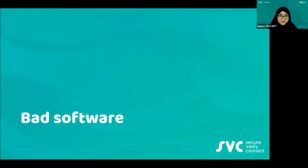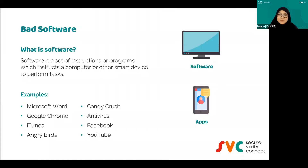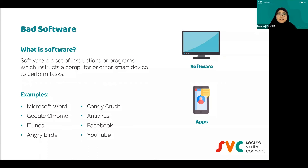The first one is bad software. To make it simple, software is basically something that we install to our devices — your laptop or even your smartphone. Whatever you install to your devices is considered software. If you install it to your laptop or computer, we call it software. If you install it to your smartphone, we call it applications or apps for short.